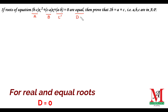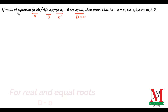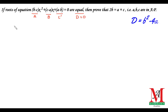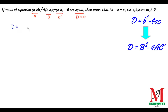Since the roots are real and equal, D is equal to 0, where D is the discriminant. In order to prove the result, we need to find D. The formula for the discriminant is b² minus 4 times a times c.